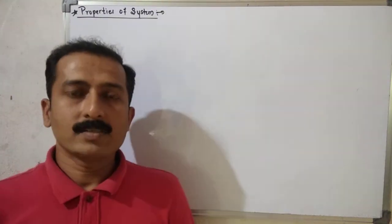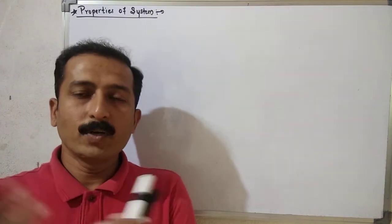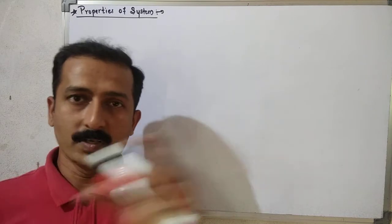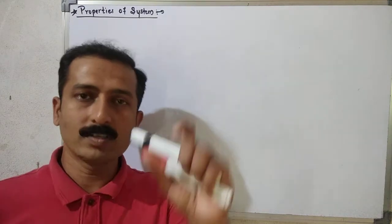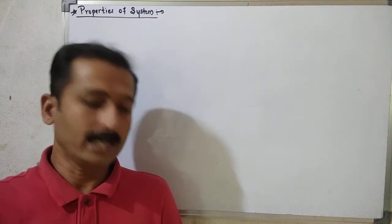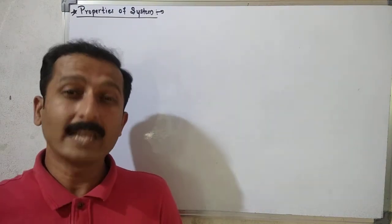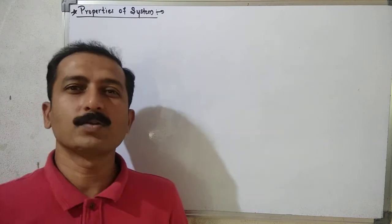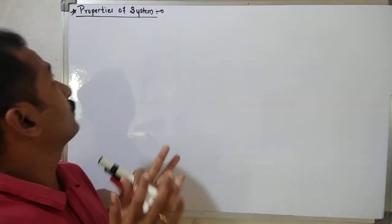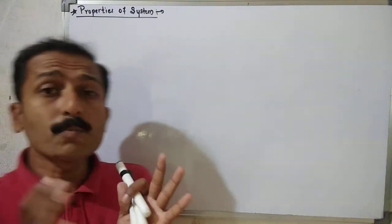Hello dear students. In the previous video we have seen the types of system: open system, closed system, isolated system, and I have already told you the examples of those systems. Now in this video we shall discuss the properties of system.